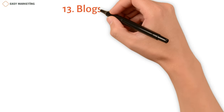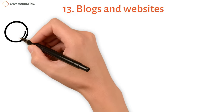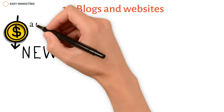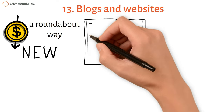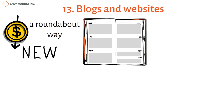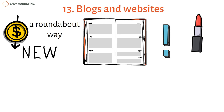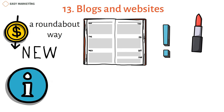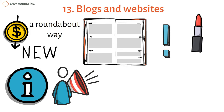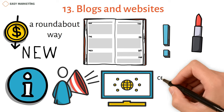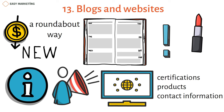Number thirteen: blogs and websites. This kind of marketing communication is fairly new and doesn't cost much. You talk about your goods in a roundabout way. A blog is a kind of online personal journal where a person can write about how they feel or other important things. For example, if you own a cosmetic store, you can use a blog to talk about beauty products or tips — giving your audience useful information while subtly promoting your brand's goods. Similarly, your business's website is its online identity, where you include information about its certifications, products, contact information, and other important facts.